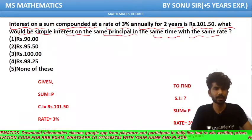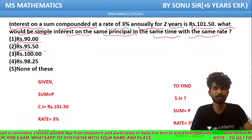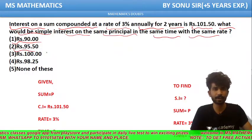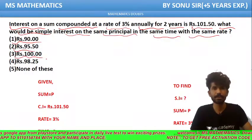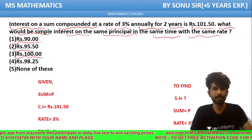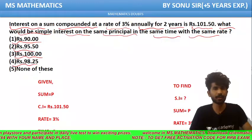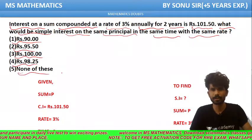The options are: option 1 – Rs. 90, option 2 – Rs. 95.5, option 3 – Rs. 100, option 4 – Rs. 98.25, and option 5 – none of these.